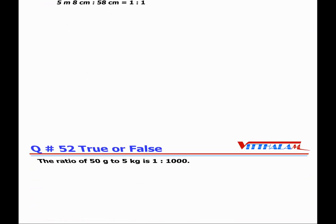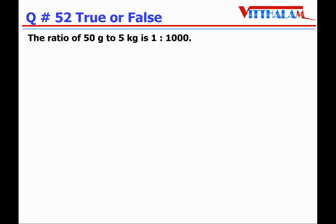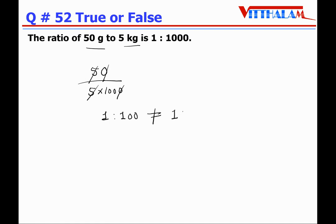Question 52: The ratio of 50 grams to 5 kg is 1:1000 — False. Convert 5 kg to grams: 5×1000 = 5000 grams. So 50:5000 simplifies to 1:100, which is not equal to 1:1000. The given statement is False.